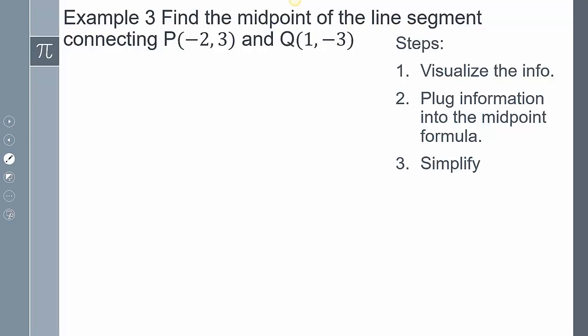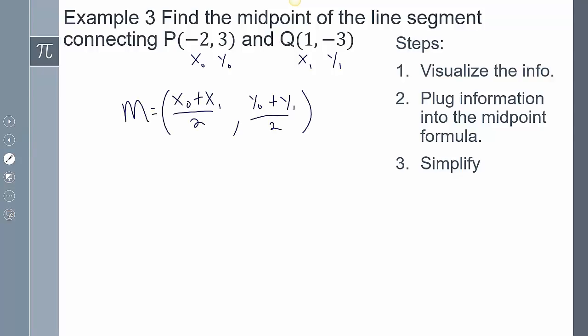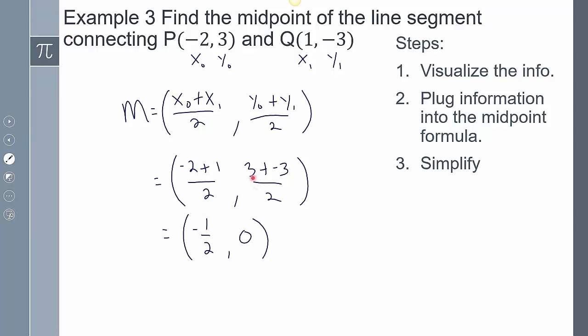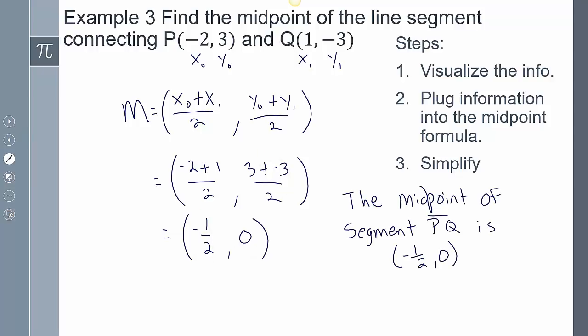Example: find the midpoint of the line segment connecting the two given points. I label them x₀, y₀, x₁, y₁ and plug into the midpoint formula. After plugging in the values — x₀, y₀ = 3, and x₁, y₁ — I simplify each coordinate. The x-coordinate simplifies to −½ and the y-coordinate simplifies to 0. So the midpoint of segment PQ is (−½, 0).